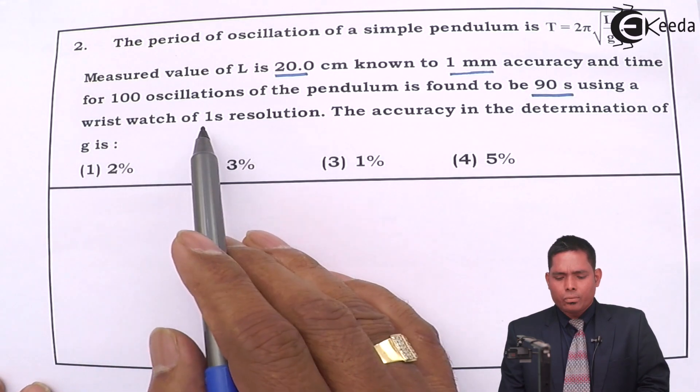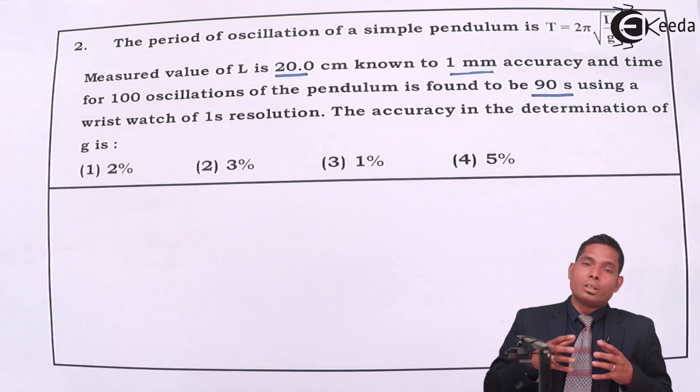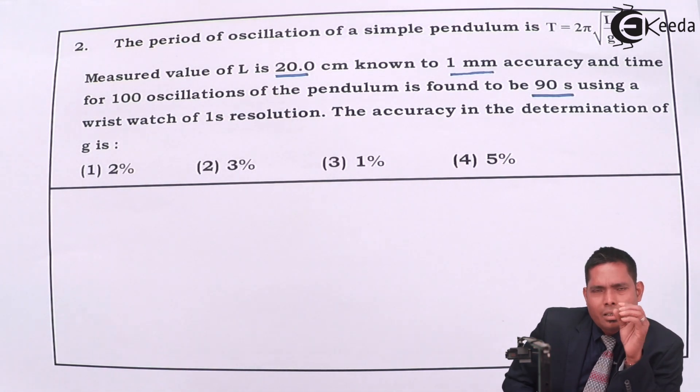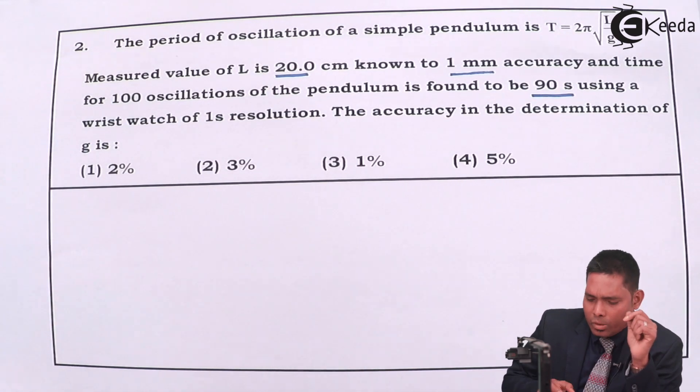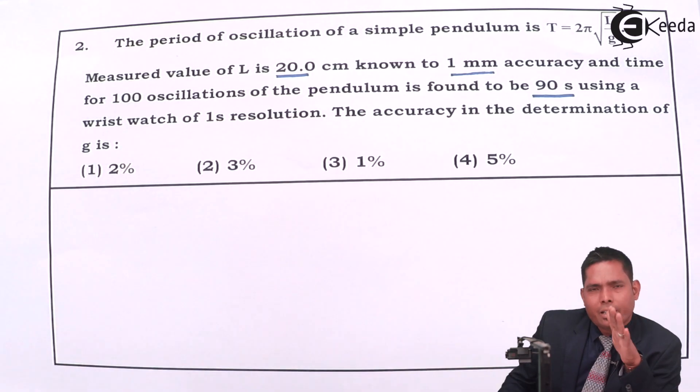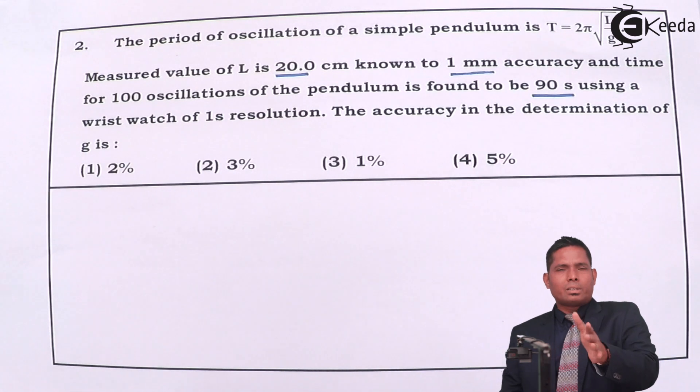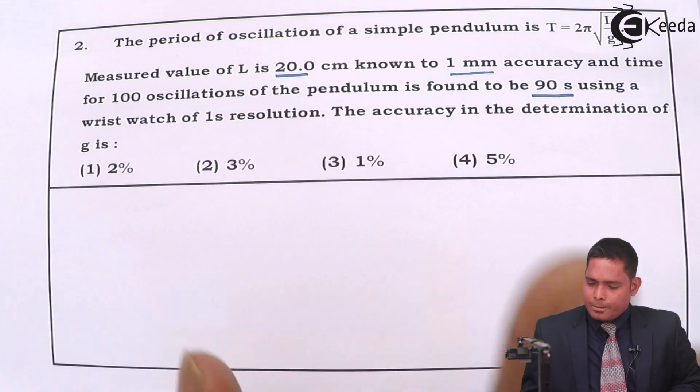This time was measured using a wristwatch of one second resolution. Resolution of one second means the wristwatch generally can measure one second—less than one second it cannot measure. So that is the least count of the instrument. Therefore the watch can resolve one second clearly, one second then another one second. In between one second it cannot see, so the resolution is one second.